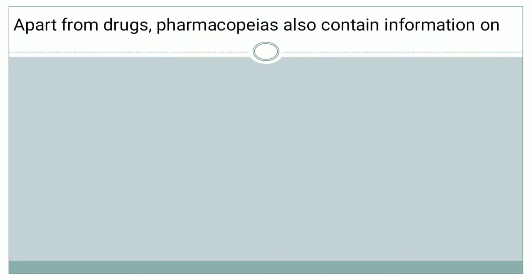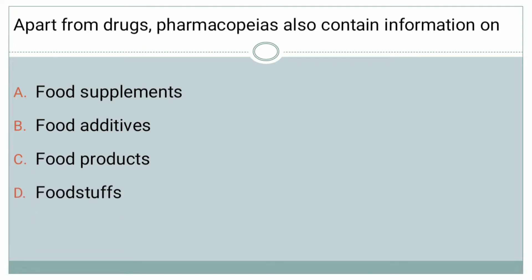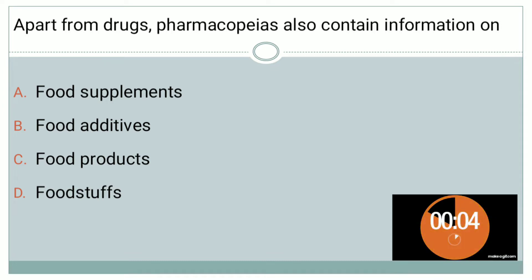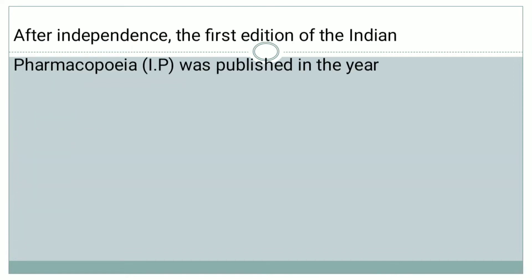The next question: Apart from drugs, Pharmacopeias also contain information on — Option A: Food Supplements, Option B: Food Additives, Option C: Food Products, Option D: Foodstuffs. The right answer is Option A, that is Food Supplements.